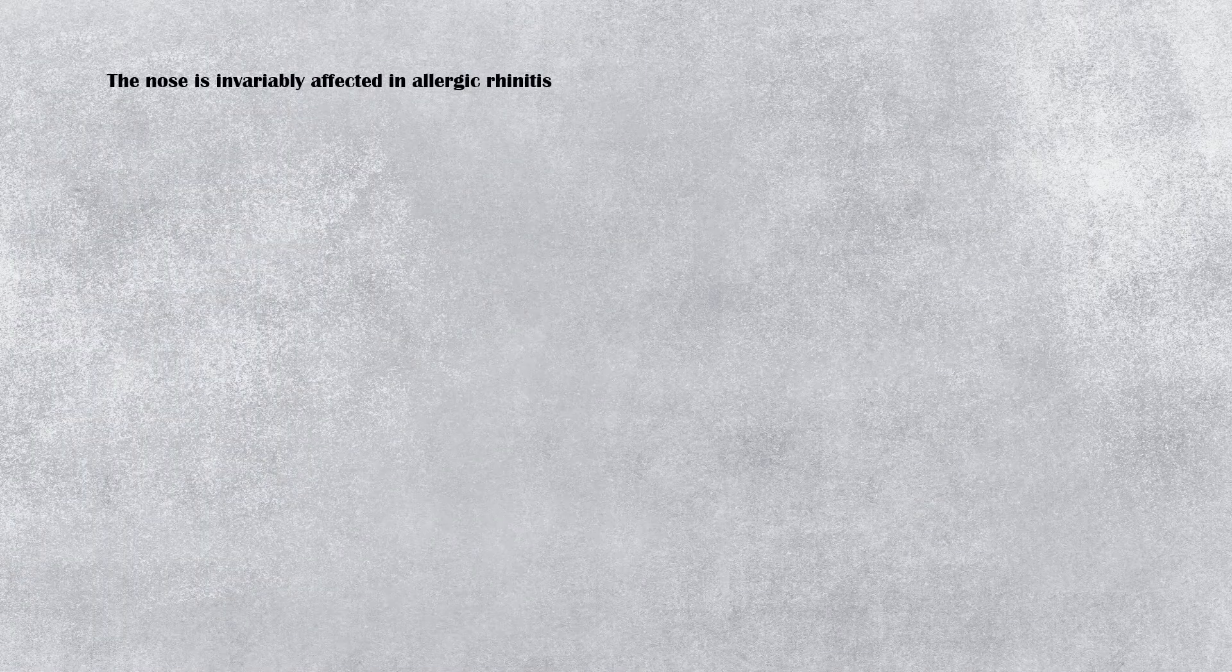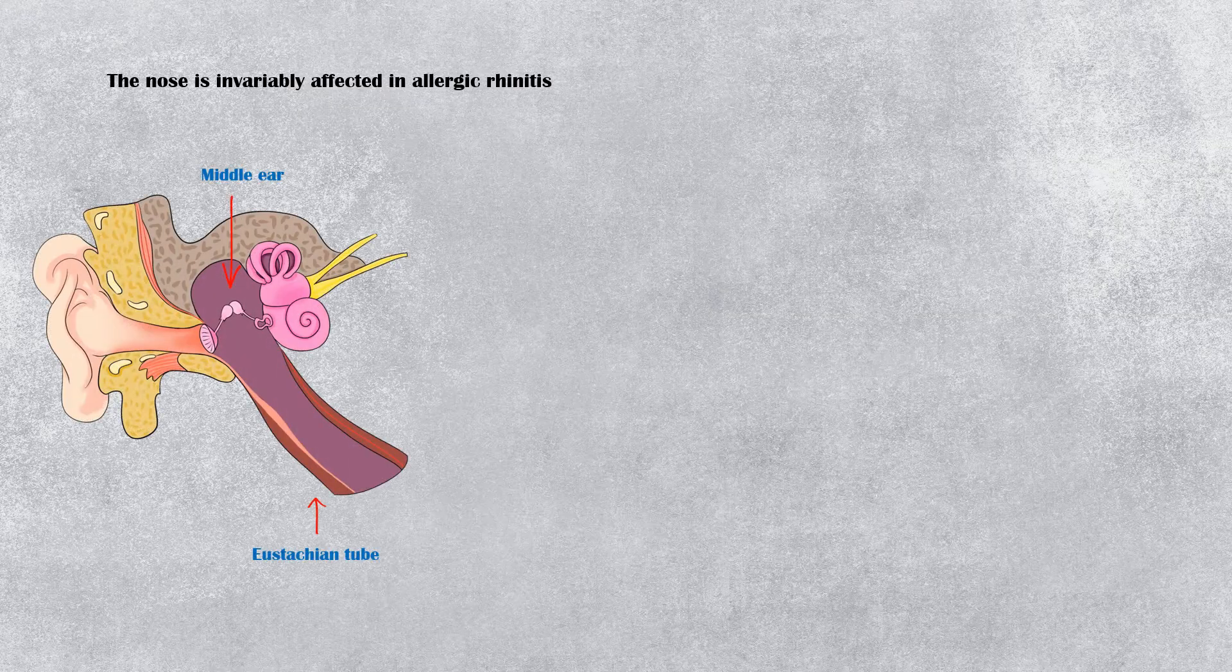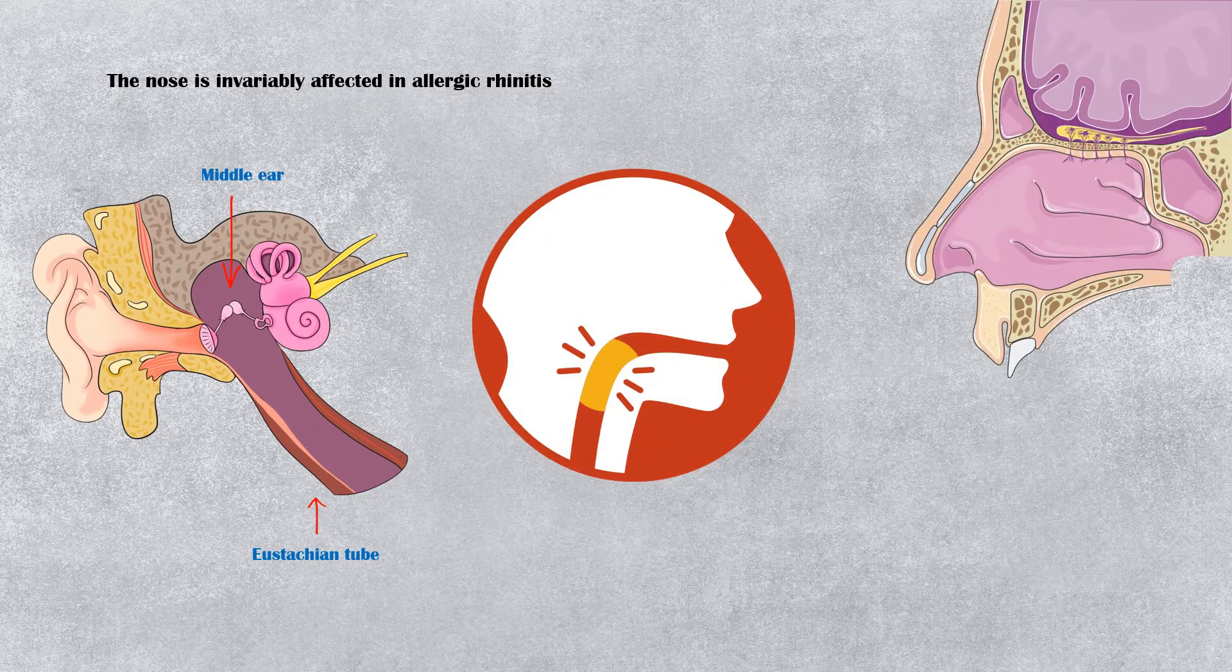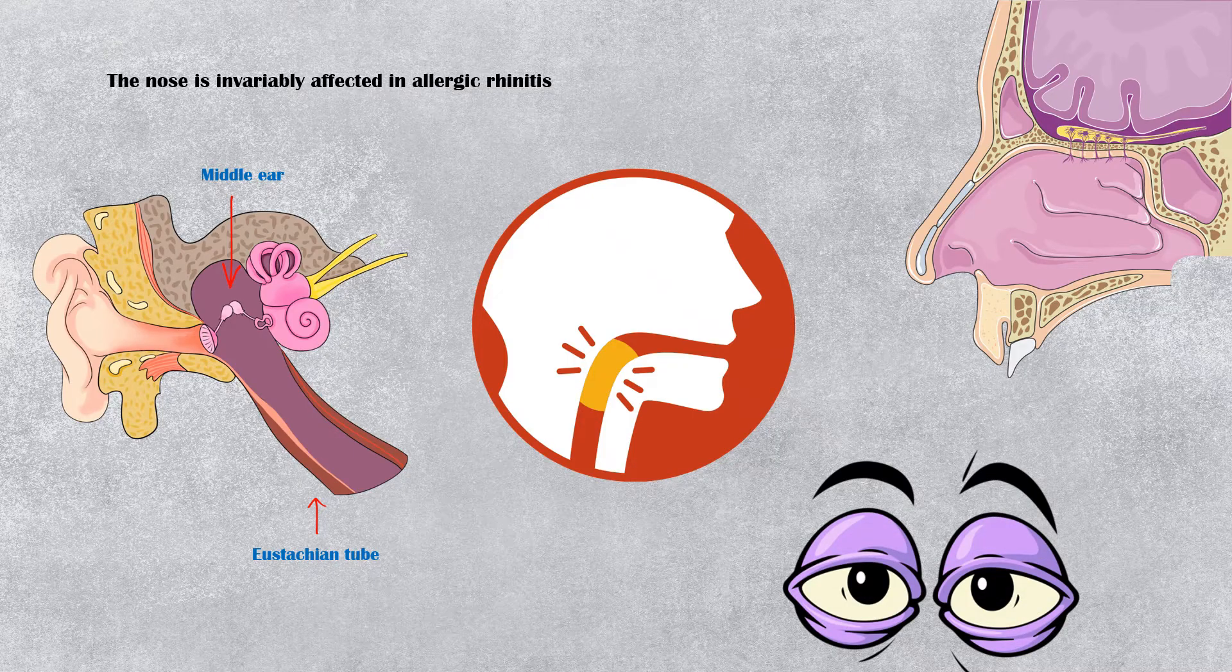The nose is invariably affected in allergic rhinitis. In addition, middle ear and the eustachian tube, pharynx, nasal and paranasal sinuses, and eyes can also be affected.